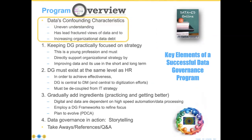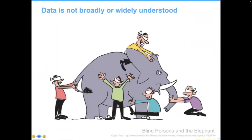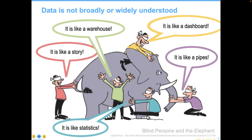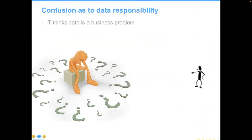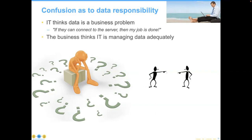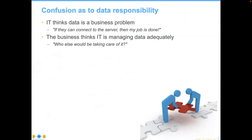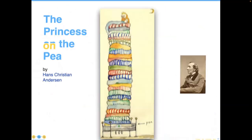We're going to talk about data's confounding characteristics and move on to four key elements that in my experience describe what a practical, growing, and evolving data governance program should look like. I'm going to dive right in with the old elephant and blind person's analogy. Data is in a similar context — people approach data from different perspectives and think data is different things, very similarly to the way blind people approached the elephant. There's been confusion because IT has thought that data is a business problem, whereas business thinks IT is managing it. Data has fallen through into an enormous chasm between IT and the business.